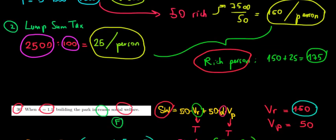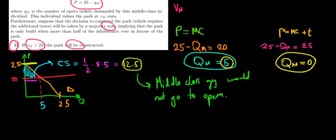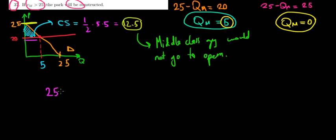But now we have one more person, one new person to the city. So we have to divide the total lump sum tax of 2,500 euros by a hundred and one. So divided by a hundred and one, that would give us approximately 24.75 euros per person. That would be the tax.